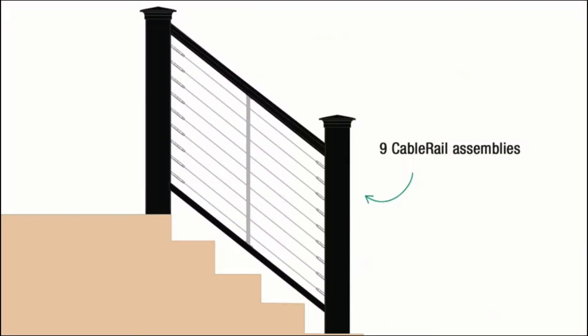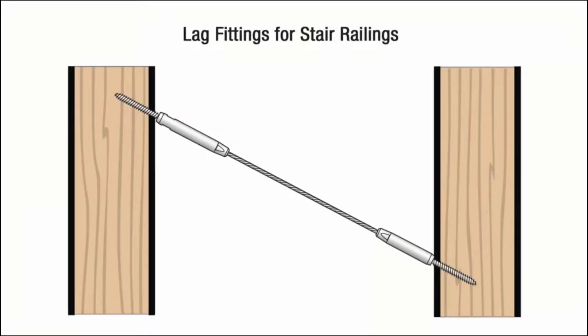We will be using nine cable assemblies for our stair railing. Each finished cable assembly will have a non-adjustable Quick Connect lag fitting on one end and a Quick Connect lag swivel turnbuckle on the other end to adjust tension.